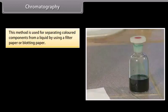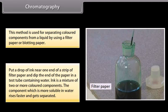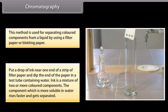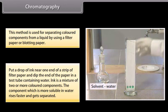Chromatography: This method is used for separating colored components from a liquid by using filter paper or blotting paper. Put a drop of ink near one end of a strip of filter paper and dip the end of the paper in a test tube containing water.